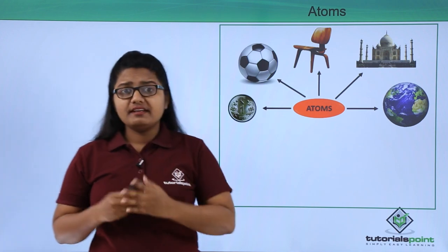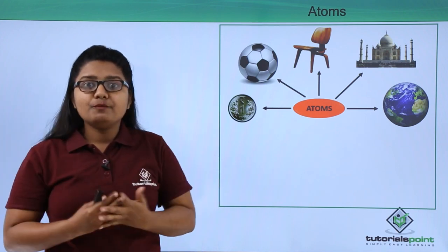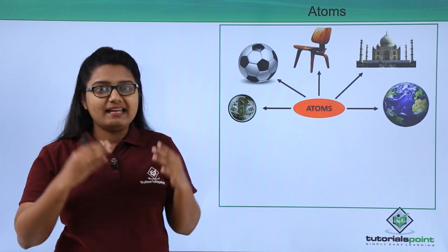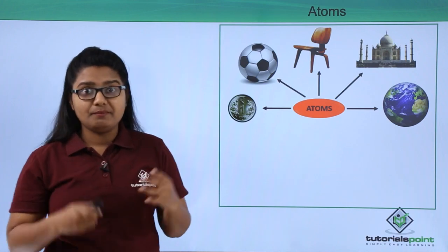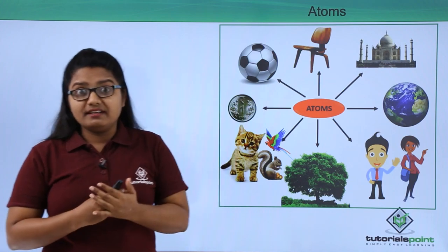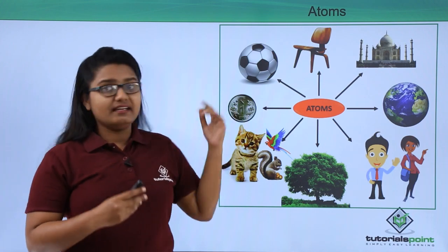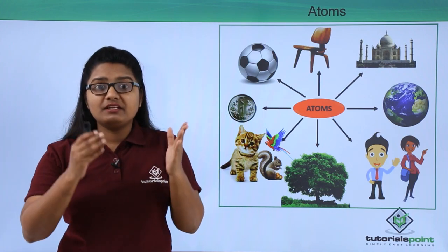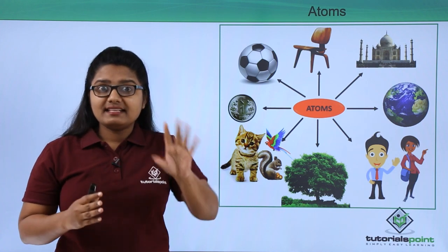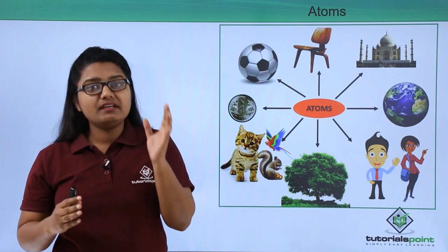You must be wondering what we humans and other living things like plants, animals, and birds are made up of. Let me tell you that these living things are made up of something called cells, and cells are called the smallest living unit.